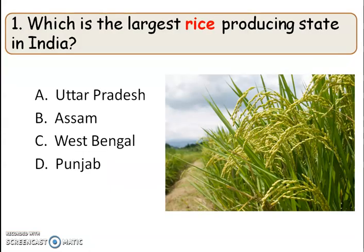First question: which is the largest rice producing state in India? The right answer is option C, West Bengal. West Bengal is the largest producer of rice, and Punjab is on the second position.